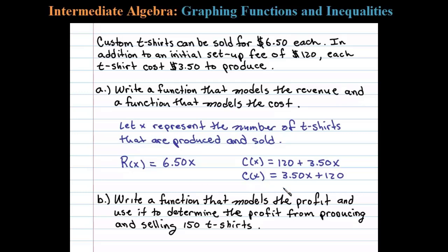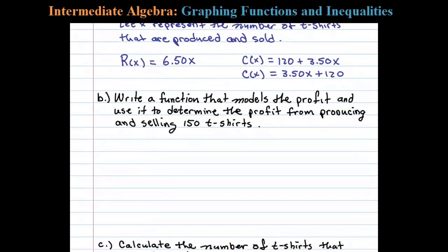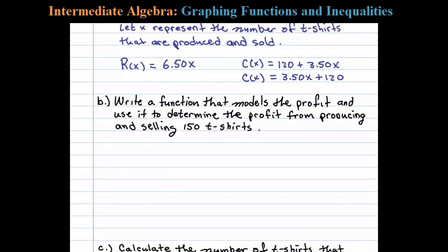Now, we'll use these two functions to determine a profit function. We not only want to determine a profit function, we want to use it to determine the profit from producing and selling 150 t-shirts. Profit is equal to revenue less costs. In other words, p of x is equal to our revenue, r of x, minus our cost, c of x.